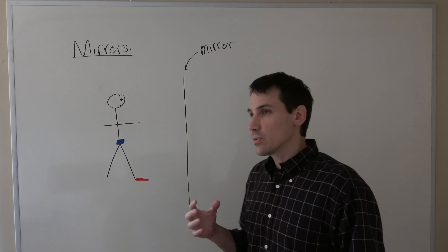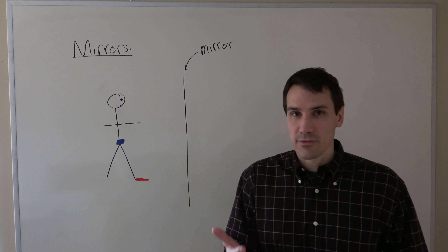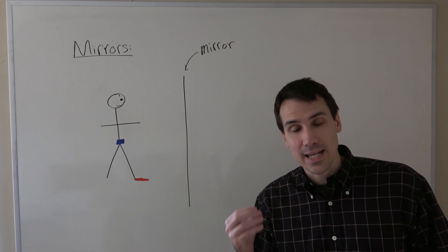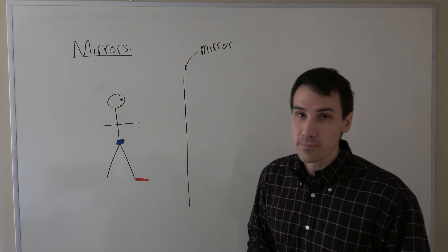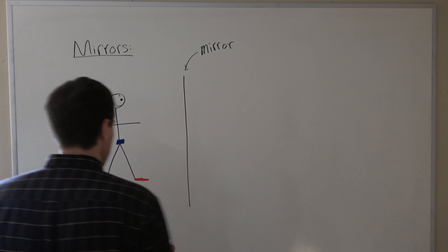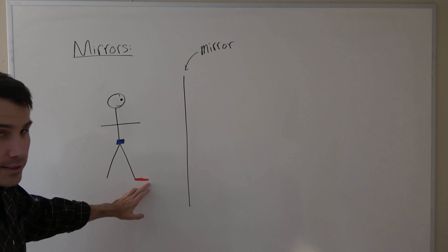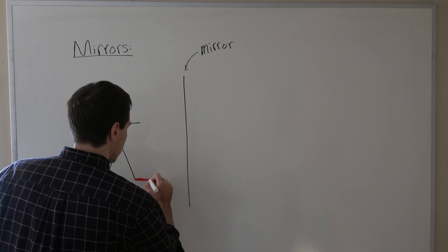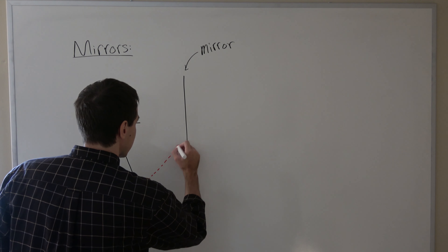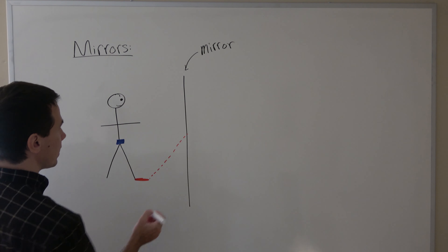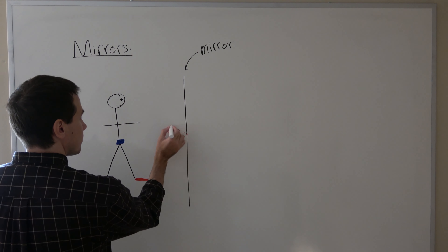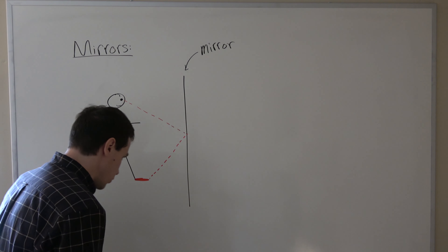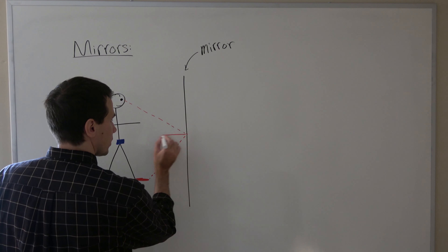To do this we need to remember that when light reflects off of some type of boundary, it always reflects at exactly its angle of incidence. So for example, let's talk about the shoes. Light from the tip of your red shoe would follow this path — it bounces off the mirror at the same angle that it entered, and just for reference I'll draw the normal here.